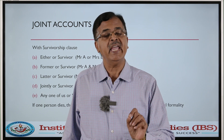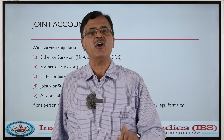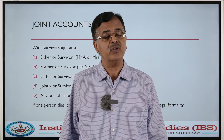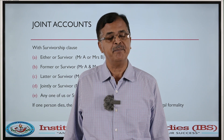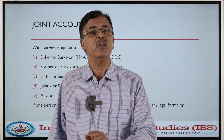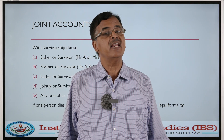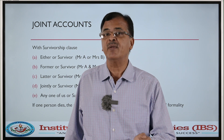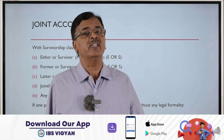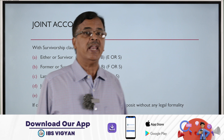In the case of jointly or survivor, both A and B should come to the bank for every operation. If something happens to both of them together, then the survivor — any one of them — can come and claim the payment. Till that time, both of them have to operate the account jointly.